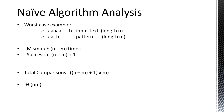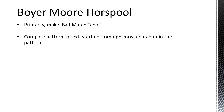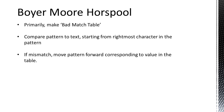Is the Boyer-Moore-Horspool algorithm more efficient? It works by first constructing a bad match table, which we'll see later. The pattern is compared to the text like the naive algorithm, but the characters are compared starting from the rightmost character in the pattern instead of the leftmost. When a mismatch occurs, you shift the pattern to the right corresponding to the value in the bad match table. For this example, we'll use the pattern 'tooth' and the text 'trust hard toothbrushes.'